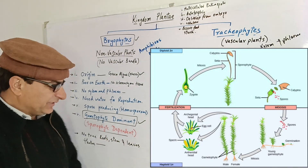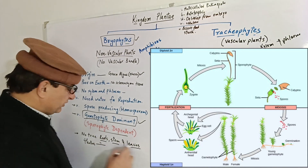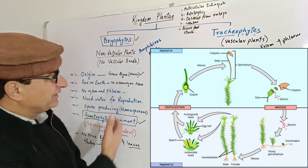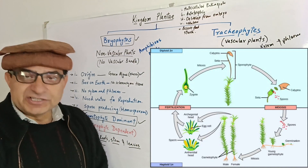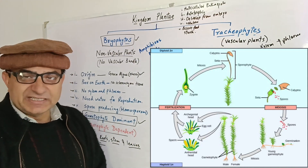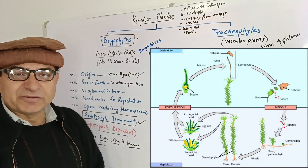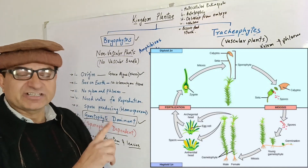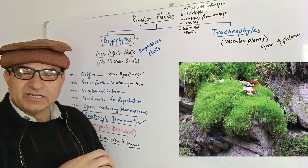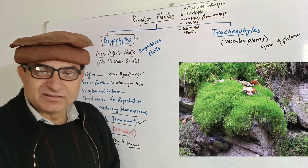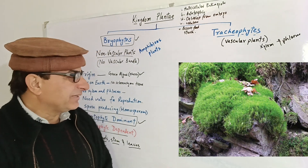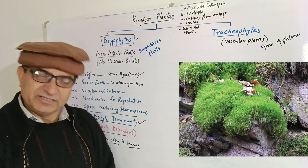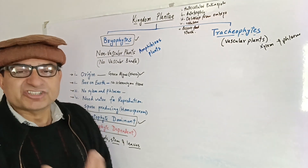In bryophytes, there are no true roots, stems, or leaves. The structure which is not differentiated into true root, stem, and leaves is called a thallus. They are thallus-like as far as their vegetative body is concerned. True roots have vascular bundles, but bryophytes have root-like rhizoids, stem-like stipes, and leaf-like blades — none of which are provided with vascular bundles. So this kind of structure is called a thallus.